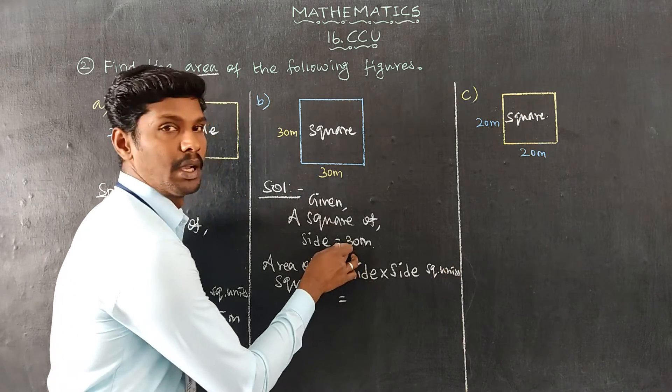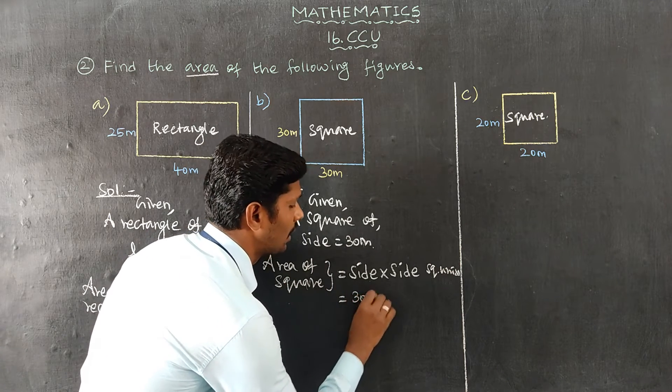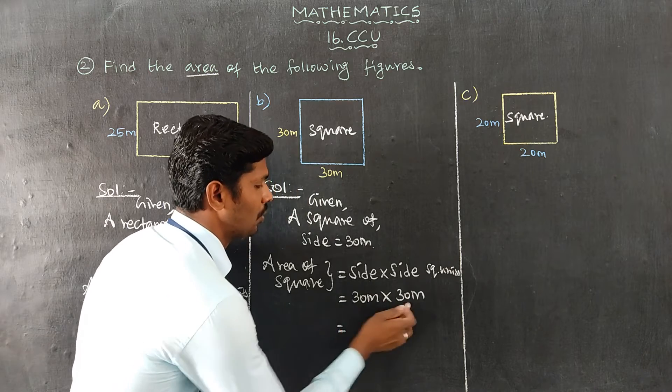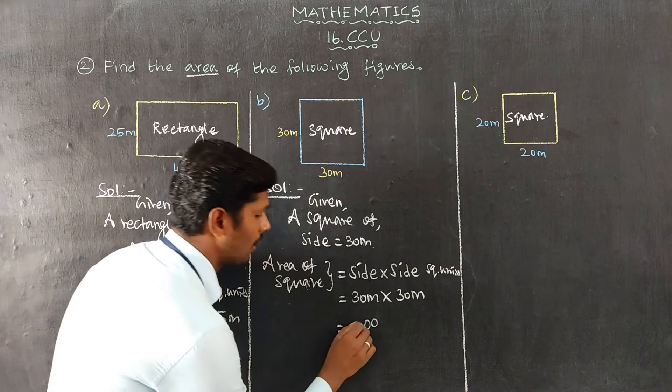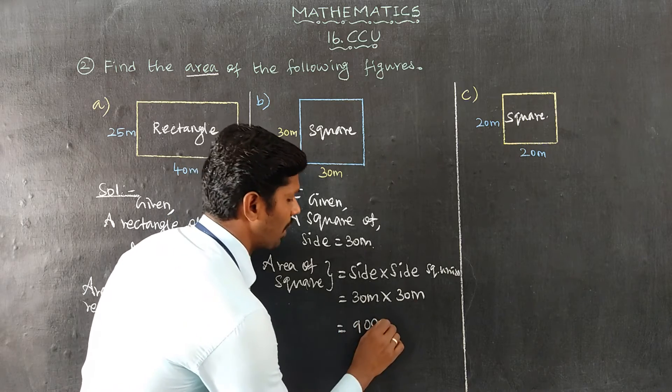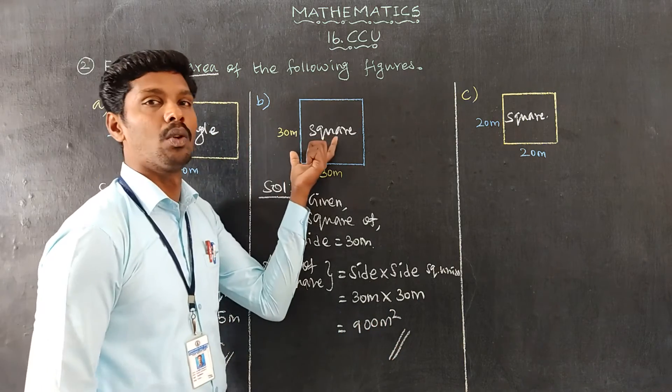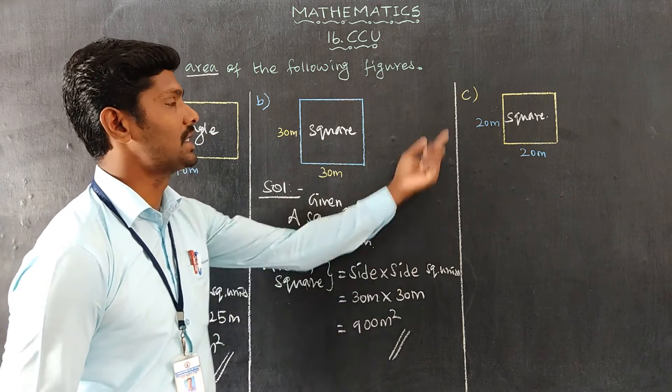Side value is 30 meters. 30 meters into 30 meters. Area of square is 900 meter square.